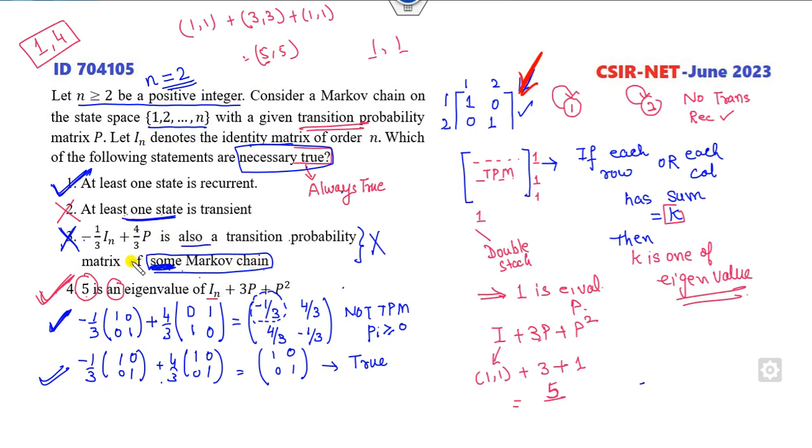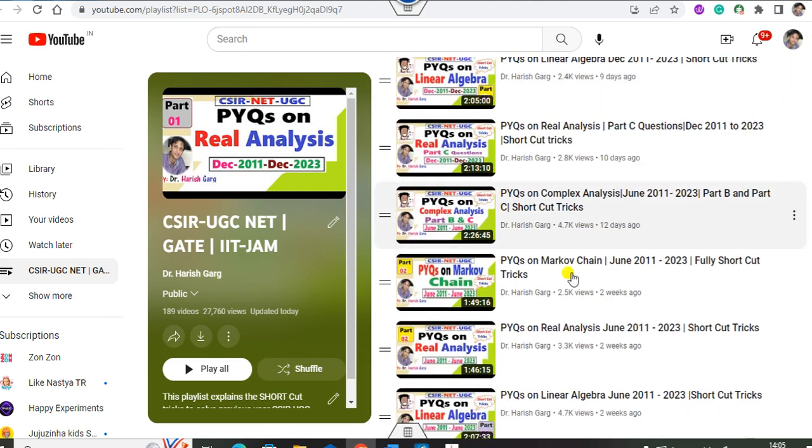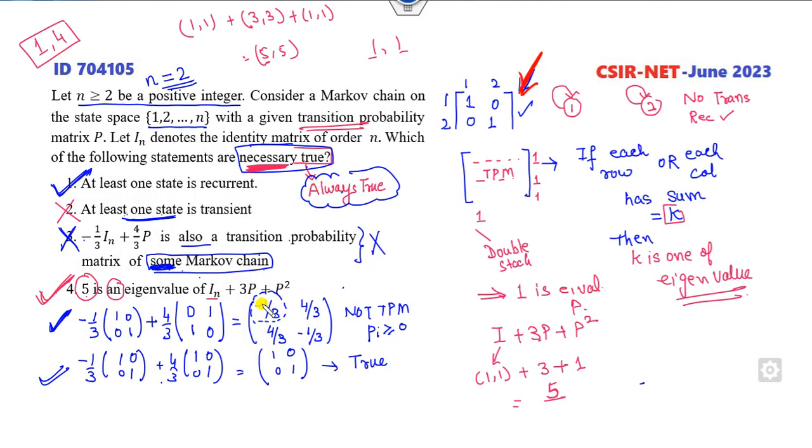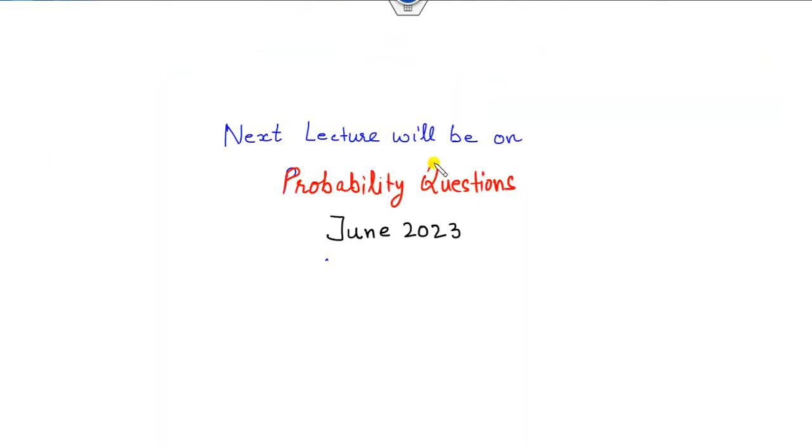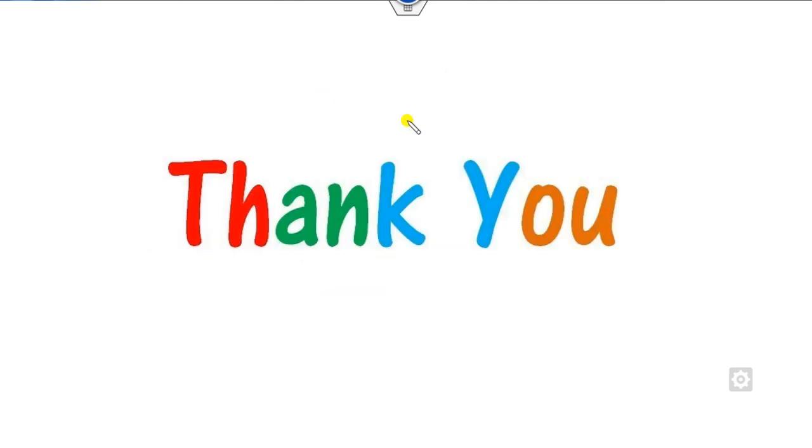So the right answer is 1 and 4 is my correct option. Remember the second and third are confusing options but which are discarded due to the term necessary. Necessary means always true. So remember this is the way you can solve this question in a very simple manner. For more detail you can see my PY questions of the Markov chain. In the next lecture we will see various probability questions relative to June 2023. Till then you can like, share and comment on my video. Best of luck students. Happy learning always.